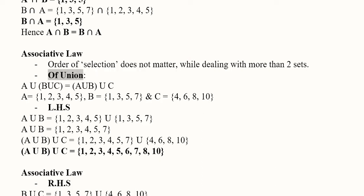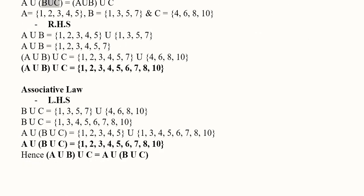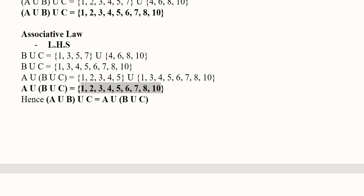Let's talk about union first with three sets A, B, and C. On the right-hand side we solve A∪B first, then take the union with C to get our answer. On the left-hand side we need B∪C, which is calculated here, and then we take the union with A by introducing A into the equation. We can see that both answers are the same, so the left-hand side equals the right-hand side. The associative law is verified for union.